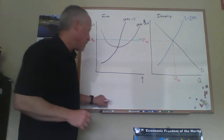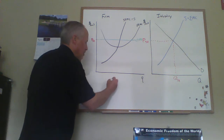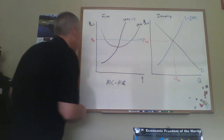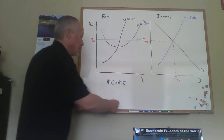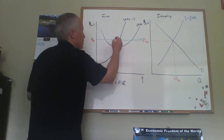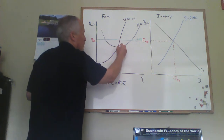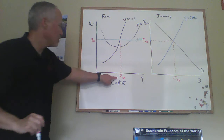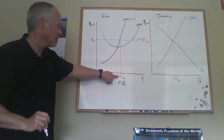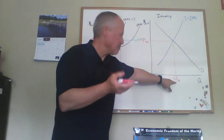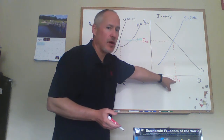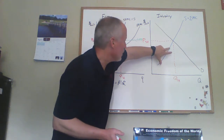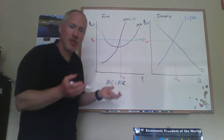Every firm, to maximize profit, will set marginal cost equal to marginal revenue. That will occur on the firm diagram at the intersection of MC and MR, giving us the quantity the individual firm will supply in the short run. We sum this up over all the firms in the industry to get the industry quantity. These numbers have to be consistent because we constructed the industry supply curve from the individual firm curves for the given number of firms.